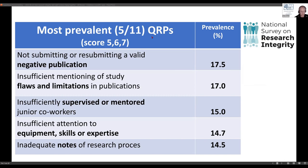There have been about 43 surveys on these research integrity issues already. This was a large and rather late one, but we are not alone. In two systematic reviews, when you study them, you can see that our values are on the high end of the scale but completely within the range of other studies. These questionable research practices could be scored on a scale of one to seven — one is never, seven is always — specifying the behavior in the last three years.